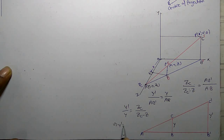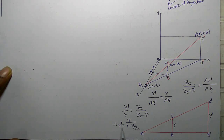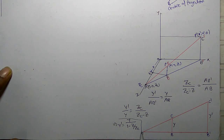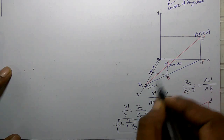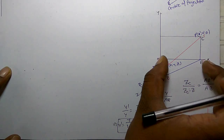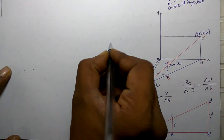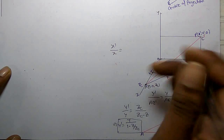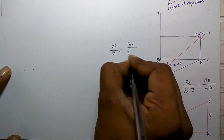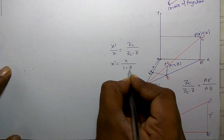So Y-dash equals Y divided by (1 minus Z upon Z_C). Similarly, comparing the x-value from triangle A, B-dash, O: X-dash upon X equals Z_C upon (Z_C minus Z). Therefore, X-dash equals X divided by (1 minus Z upon Z_C).